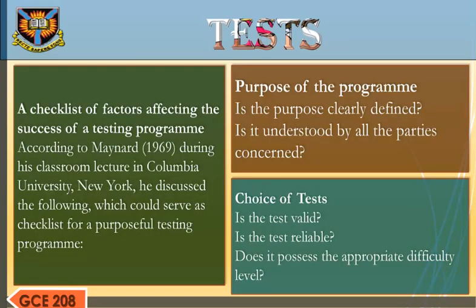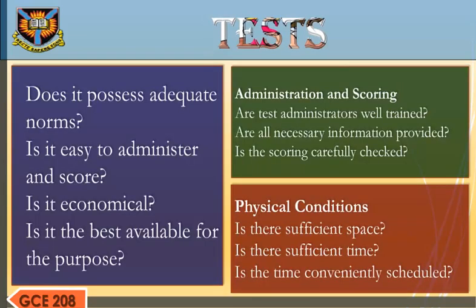A Checklist of Factors Affecting the Success of a Testing Program. According to Maynard, 1969, during his classroom lecture at Columbia University, New York, he discussed the following, which could serve as a checklist for a purposeful testing program. Purpose of the Program: Is the purpose clearly defined? Is it understood by all parties concerned? Choice of Tests: Is the test valid? Is the test reliable? Does it possess the appropriate difficulty level? Does it possess adequate norms? Is it easy to administer and score? Is it economical? Is it the best available for the purpose?